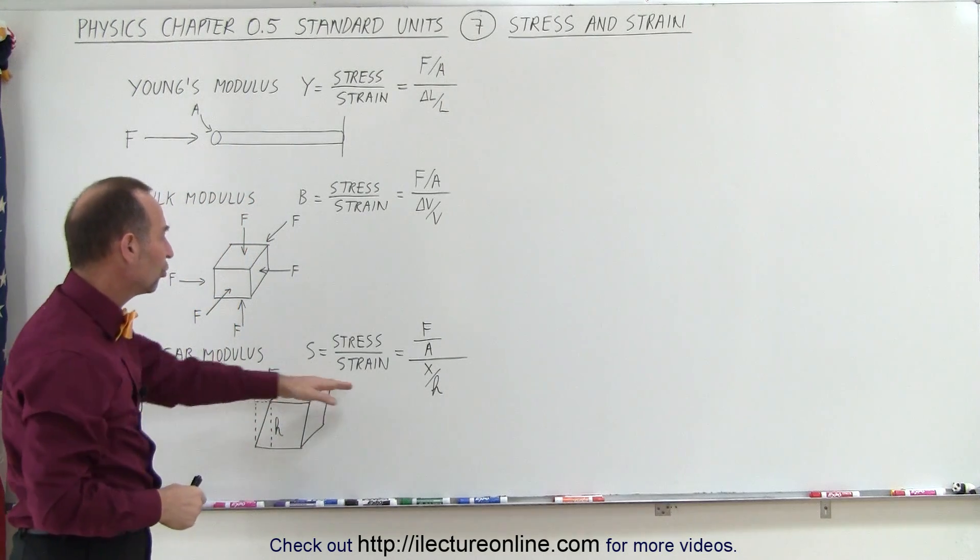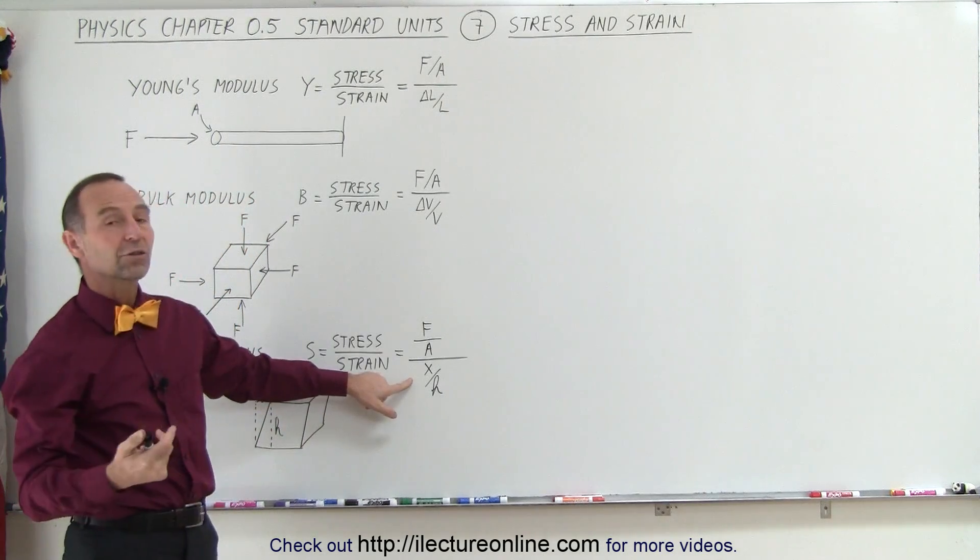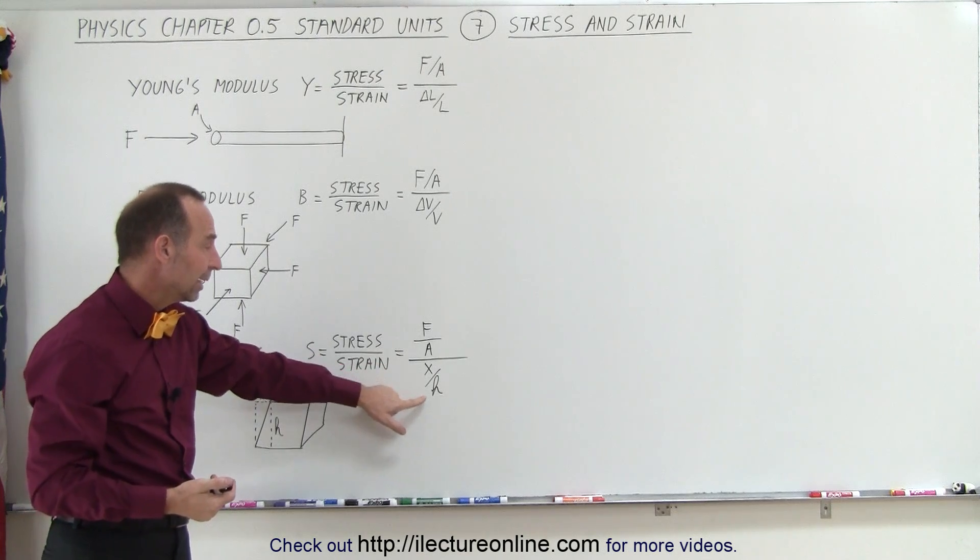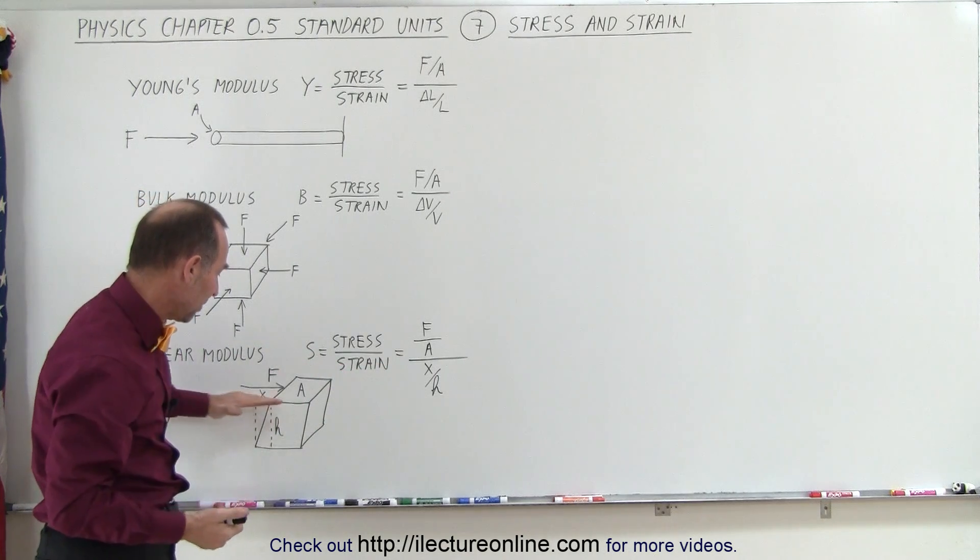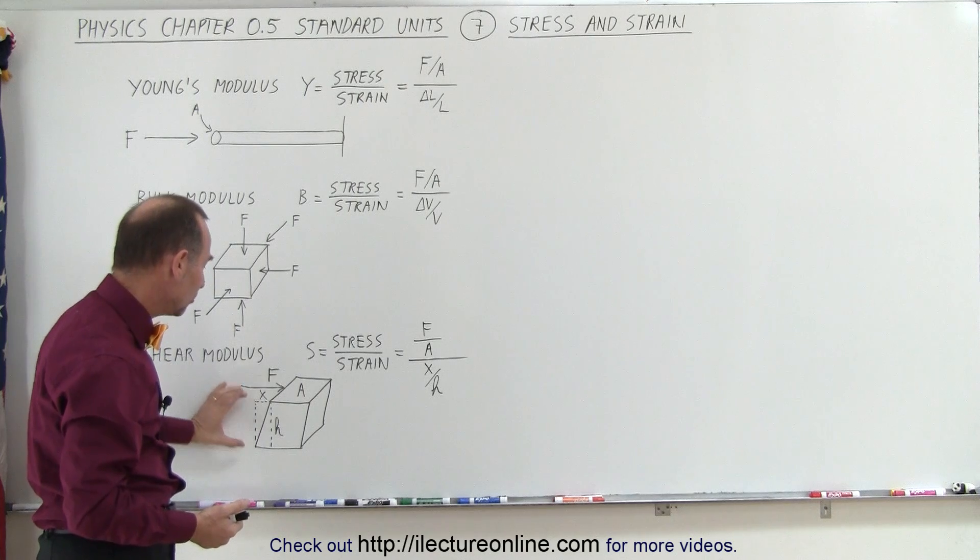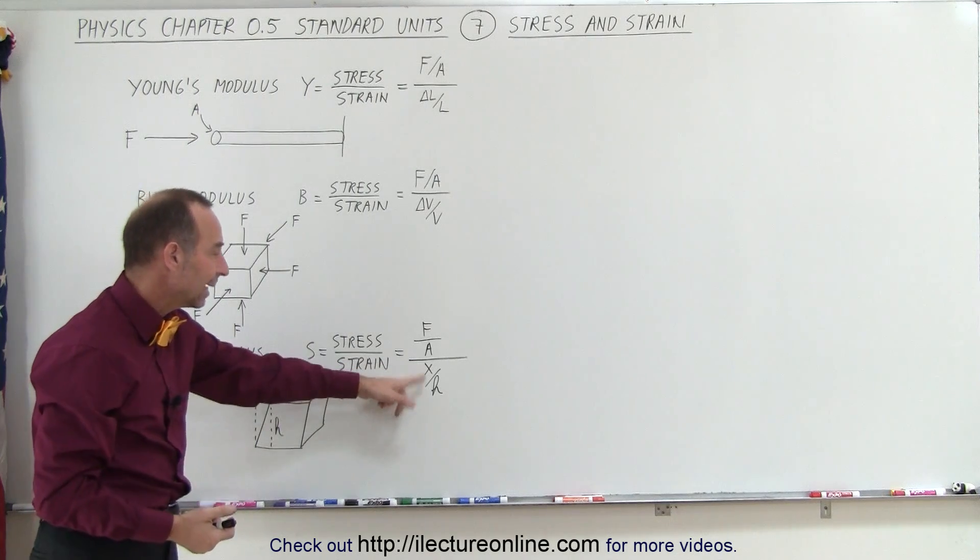In the case of shear modulus, the strain also will have no units because x is linear and h is linear. So x is the deformation in the horizontal direction, h is the height of the object, and again they cancel out.